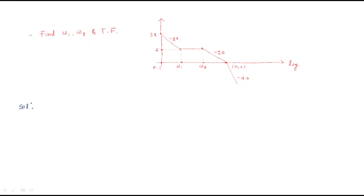As discussed last class, the initial slope is minus 20 dB/decade and decreasing, so we have k/s. At w1, a plus 20 dB/decade slope is added, which means a zero is added, giving the term (1 + s/w1). After that, minus 20 dB/decade is added at w2, meaning a pole is added, giving (1 + s/w2).